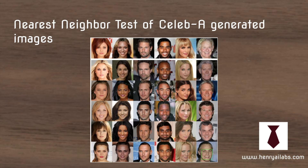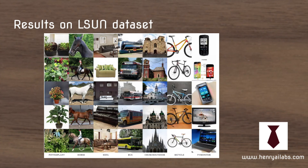This slide shows the nearest neighbor comparison with the generated images on the CelebA dataset. It's interesting to see the diversity of images the generator is able to produce, even though the training set doesn't really have these exact images in it. Another image shows that the progressively growing GAN model works well on image datasets other than faces.